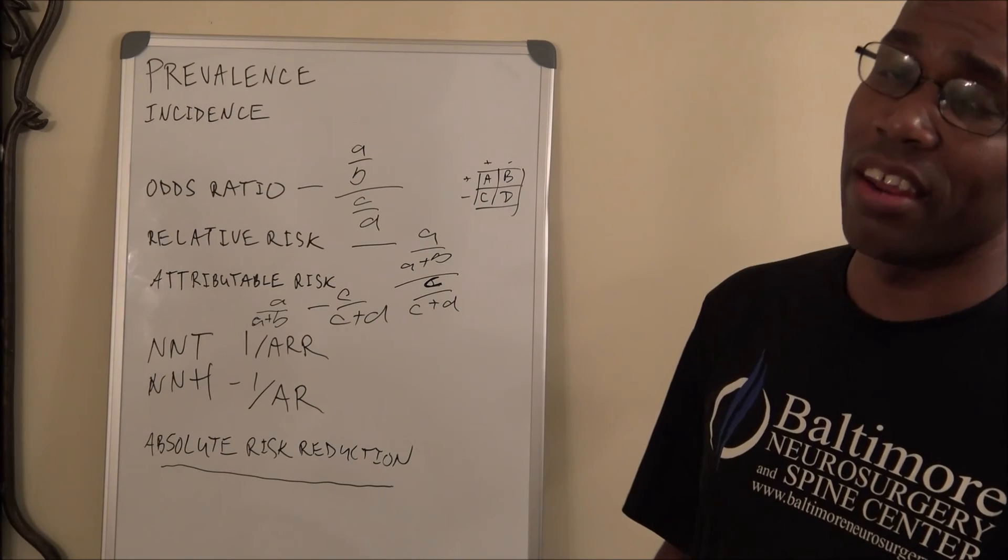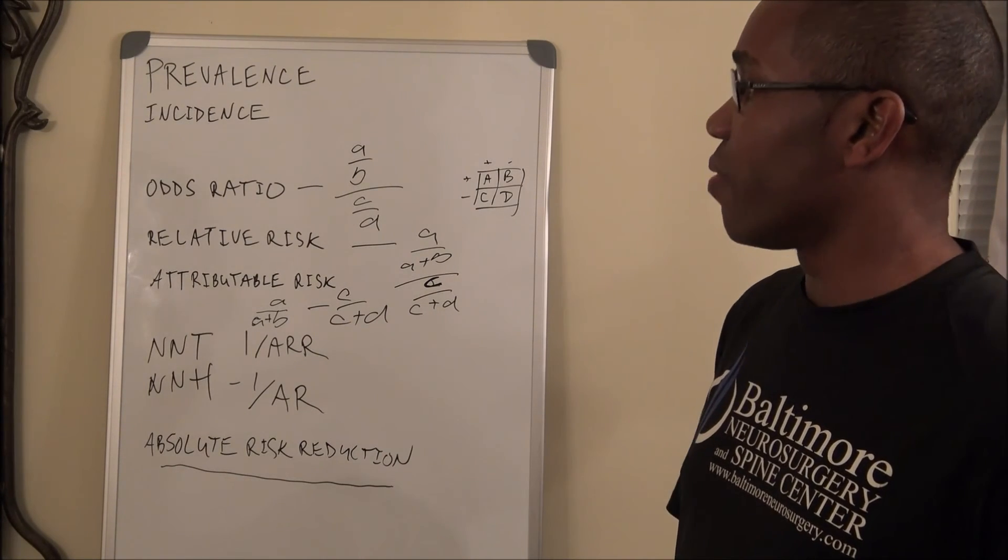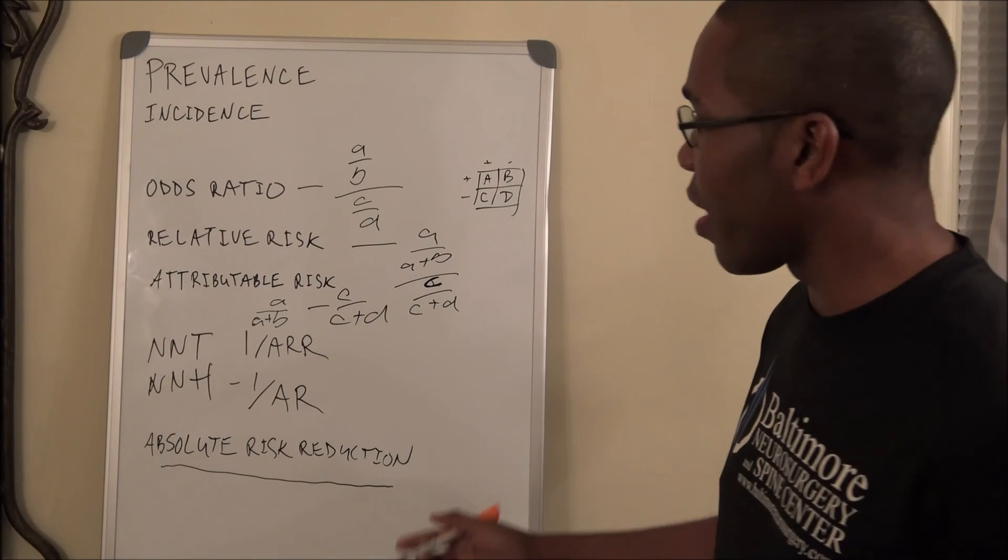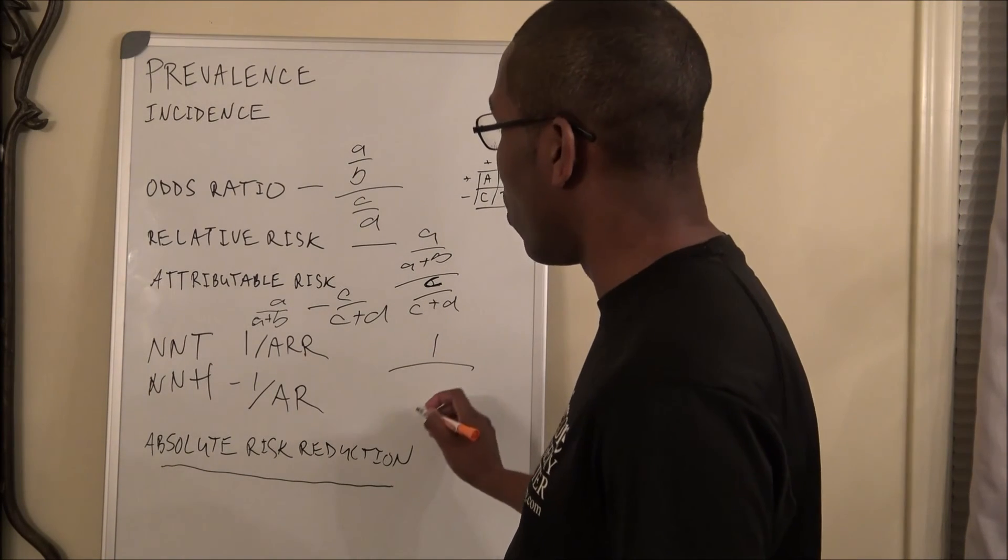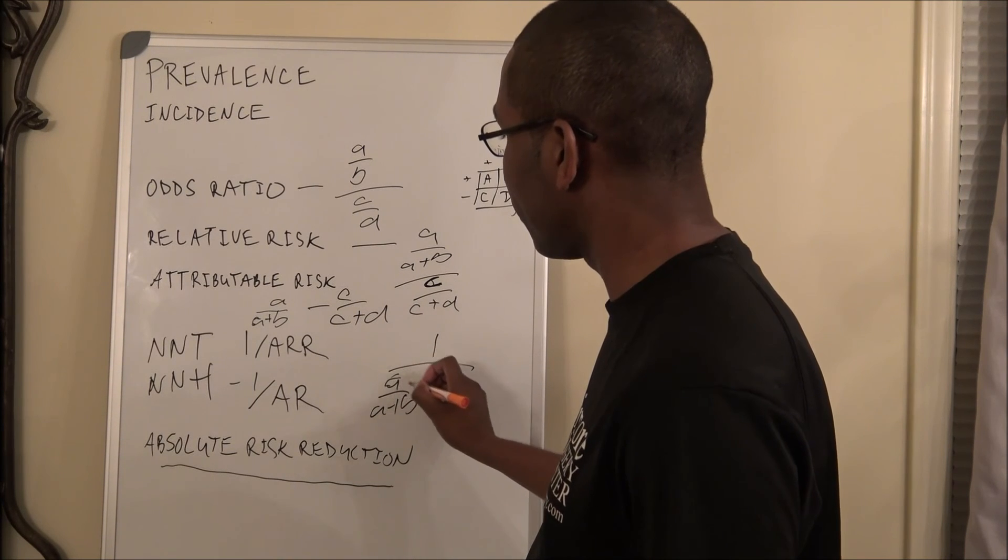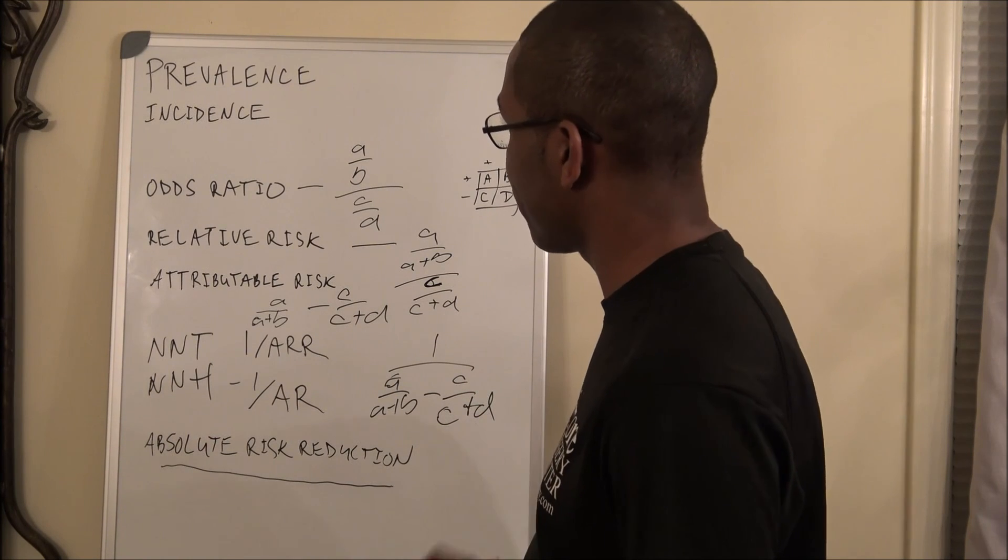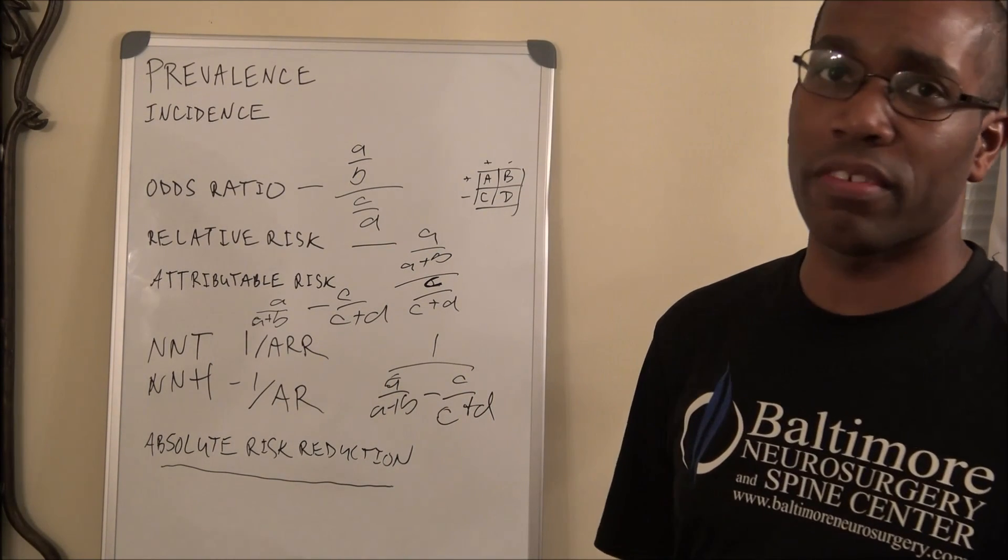Number needed to harm, they do make you calculate that quite a bit. And that's one over attributable risk. So you've got one over A over A plus B minus C over C plus D. And that's basically it.